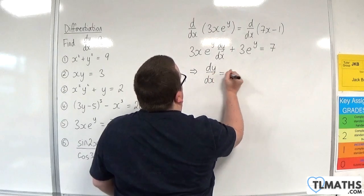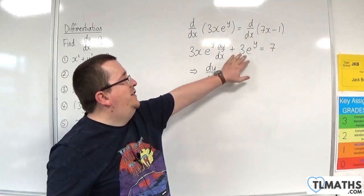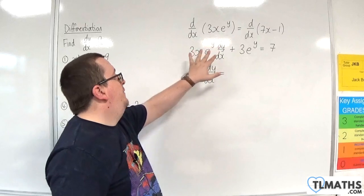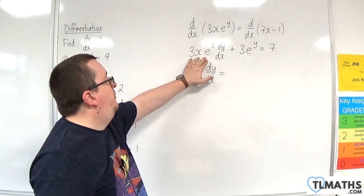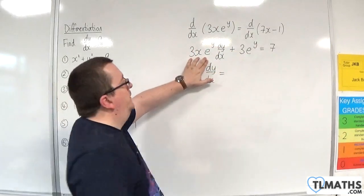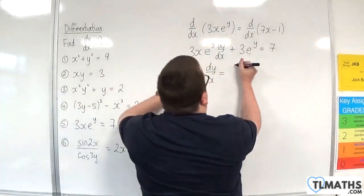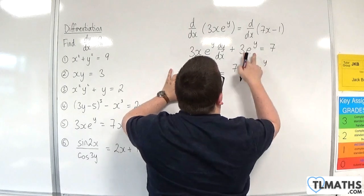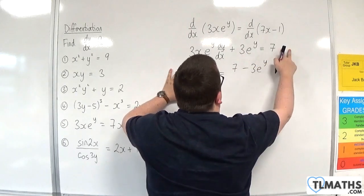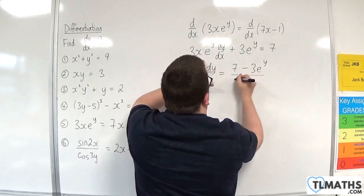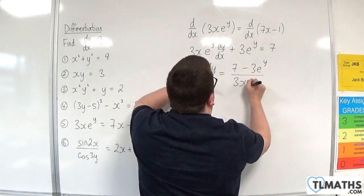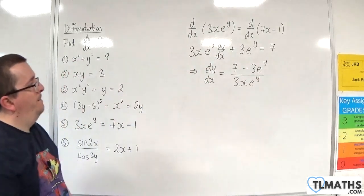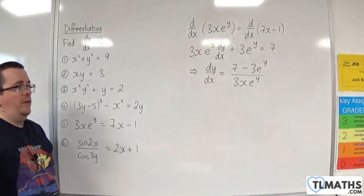Subtracting 3 e to the y from both sides and then dividing both sides by 3x e to the y gives dy by dx equals (7 minus 3 e to the y) over 3x e to the y.